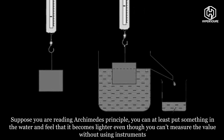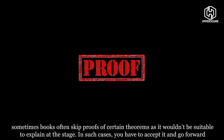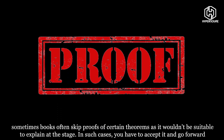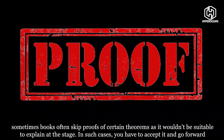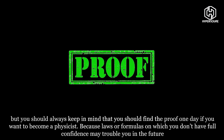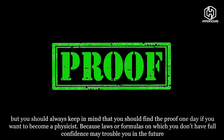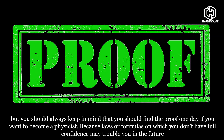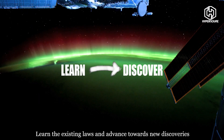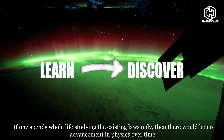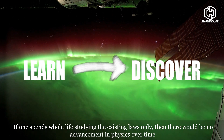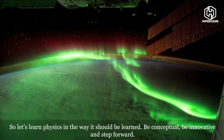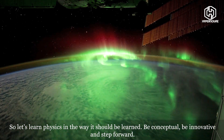Sometimes books skip proofs of certain theorems as it wouldn't be suitable to explain at that stage. In such cases, you have to accept it and go forward, but you should always keep in mind that you shall find the proof one day — especially if you want to become a physicist, because laws or formulas in which you don't have full confidence may trouble you in the future. Learn the existing laws and advance towards new discoveries. If one spends their whole life studying existing laws only, there would be no advancement in physics. So let's learn physics the way it should be learned: be conceptual, be innovative, and strive for what lies ahead.